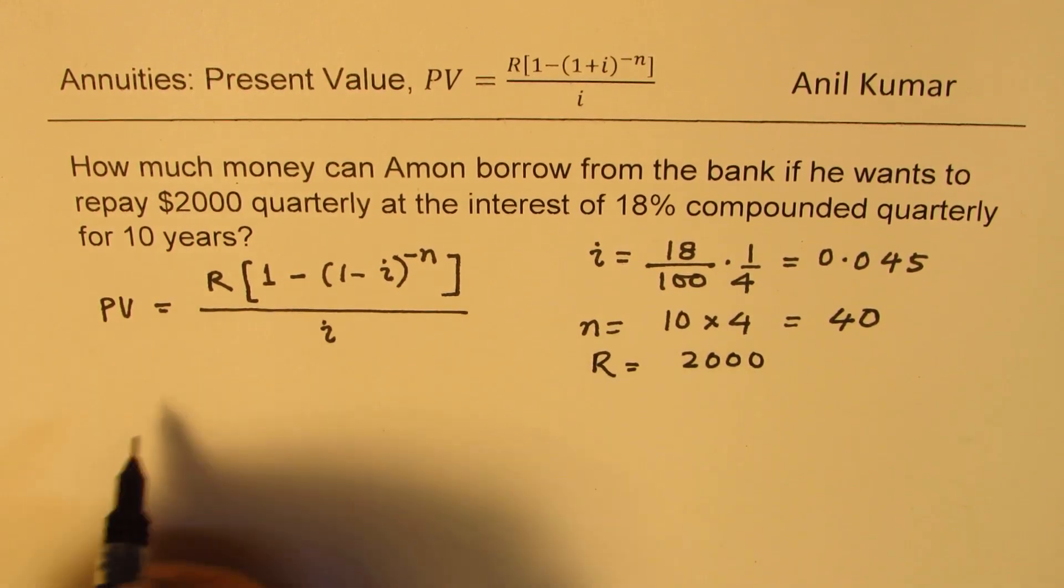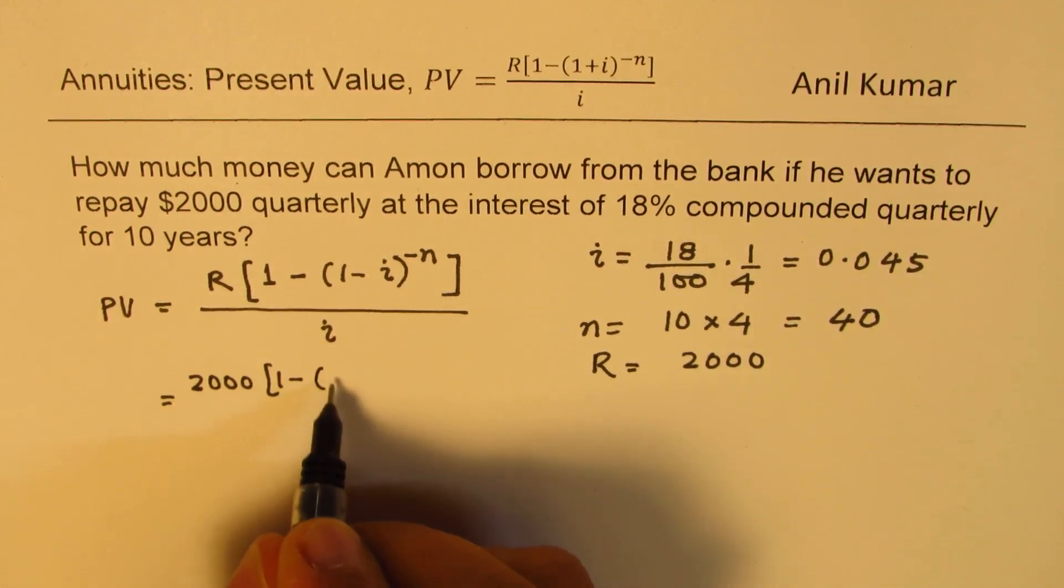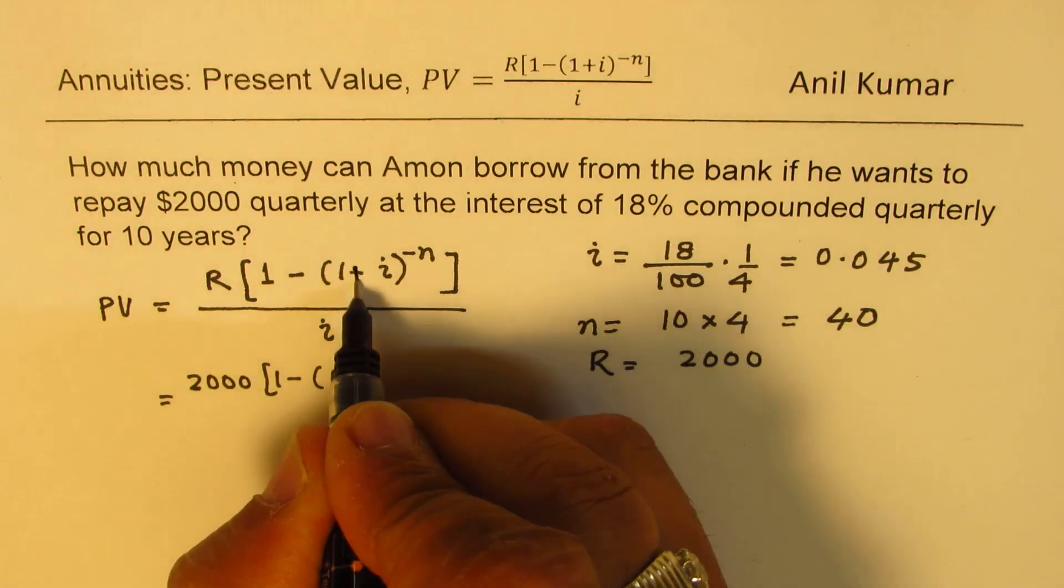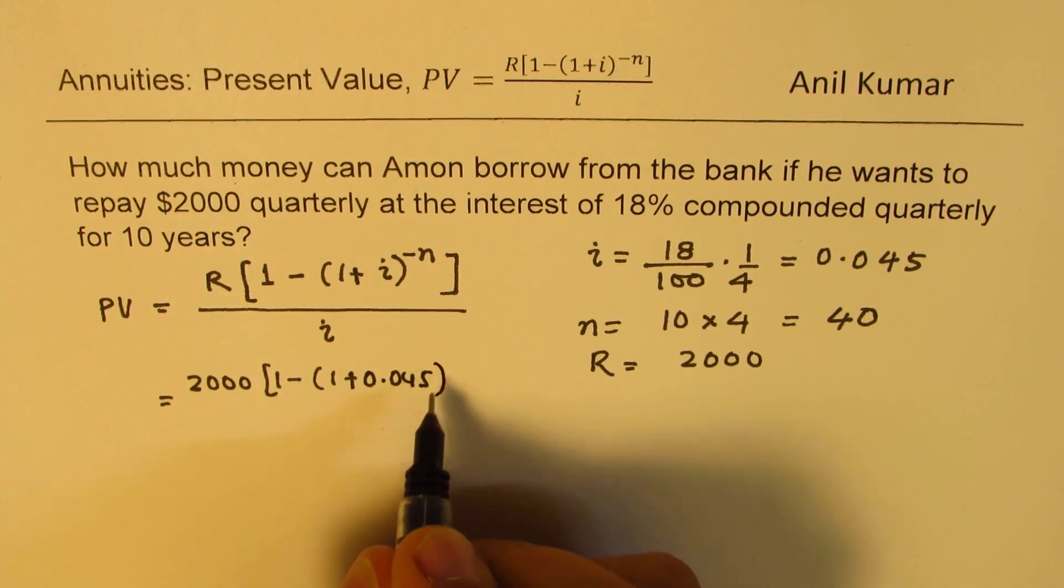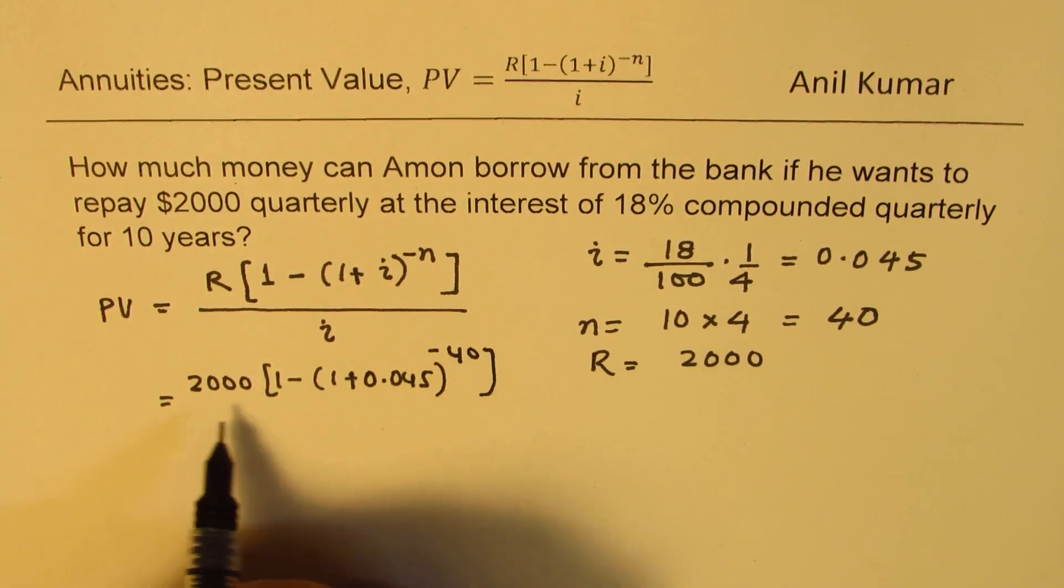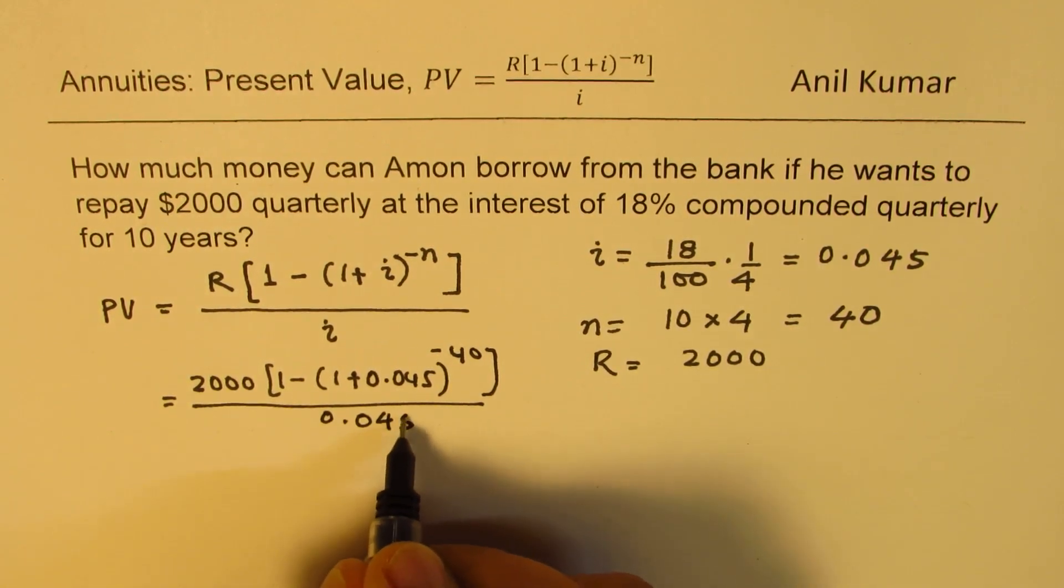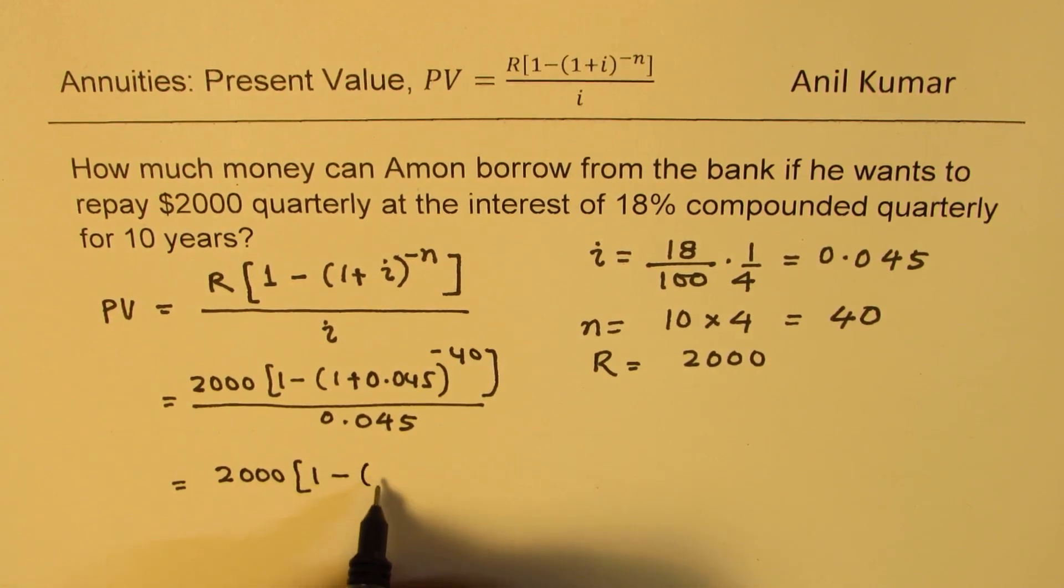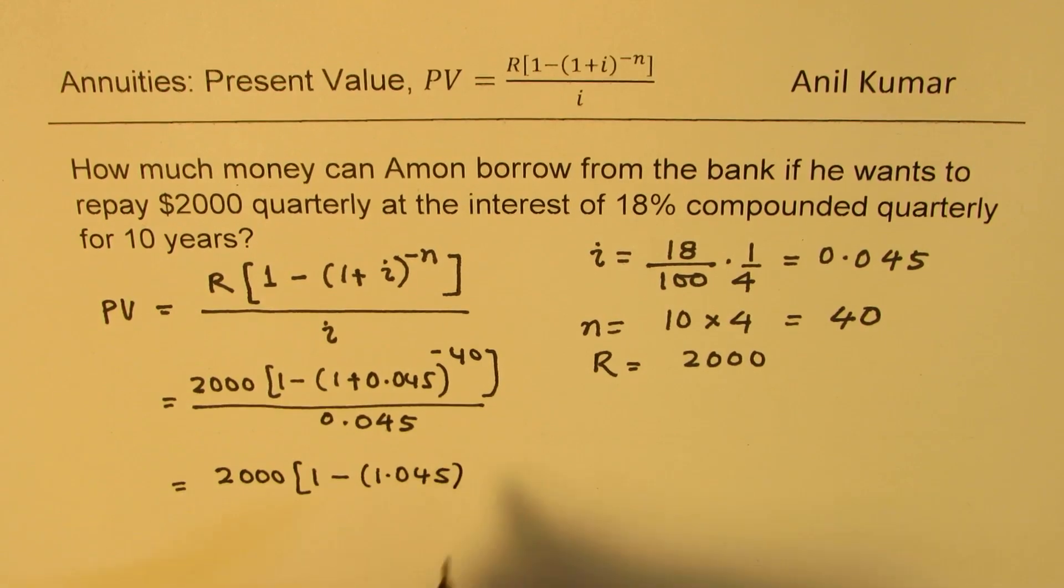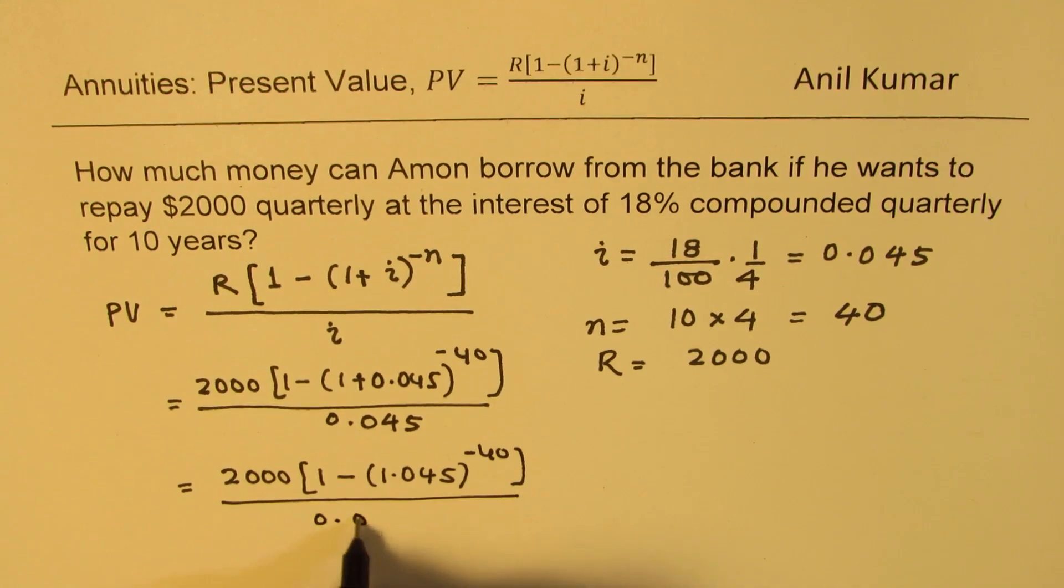Substituting these values, we can actually find the answer, so we have 2,000 times 1 minus (1 plus 0.045) to the power of minus 40, divided by 0.045.